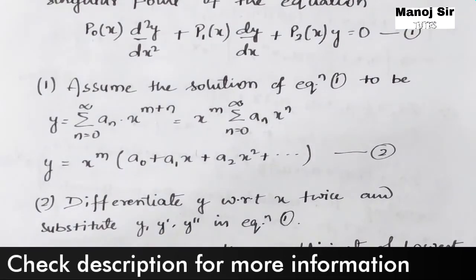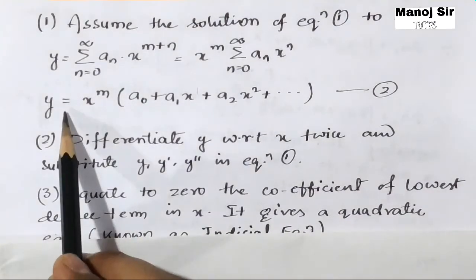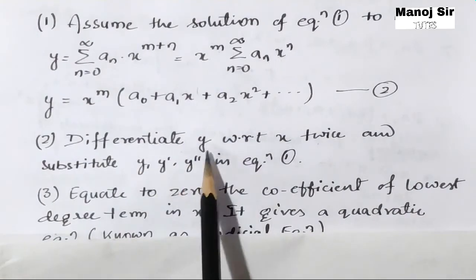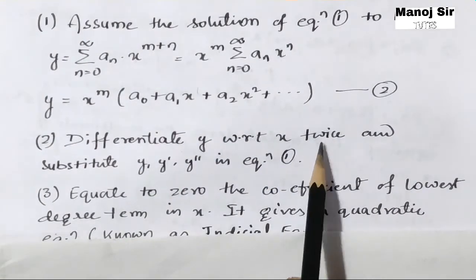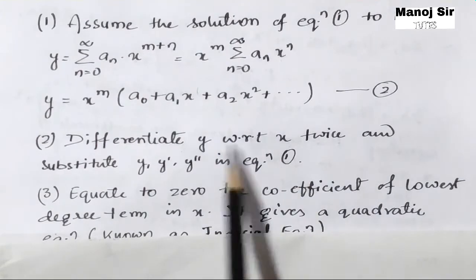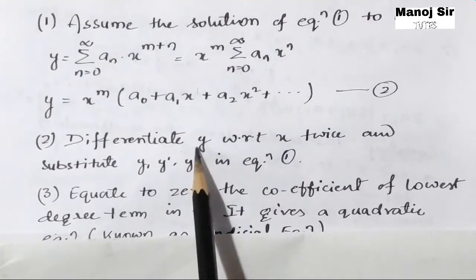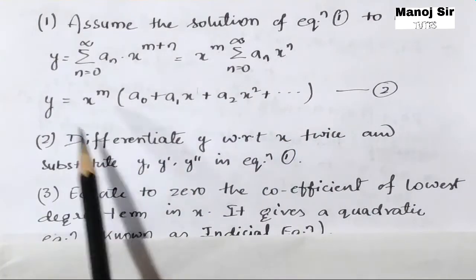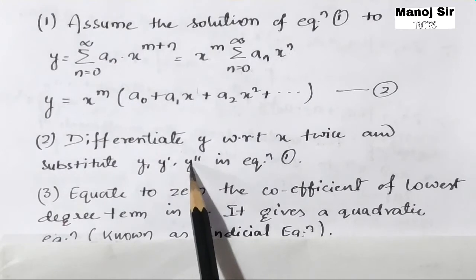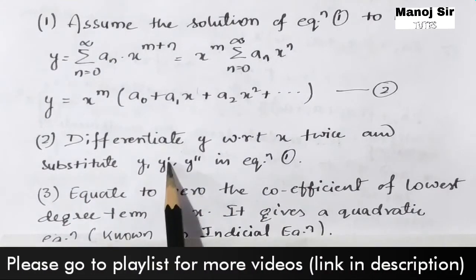We have y. Now we need to differentiate this y with respect to x two times, that is twice. So we will get y, y-dash, and y-double-dash. If you differentiate y two times you have values for y, y-dash, and y-double-dash. Then we need to substitute y, y-dash, and y-double-dash in equation number 1.